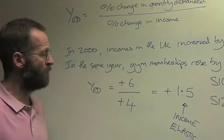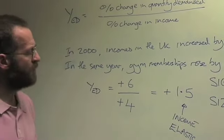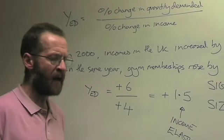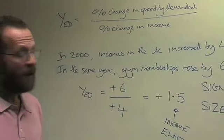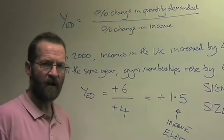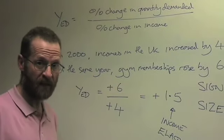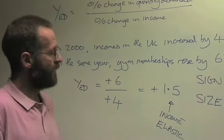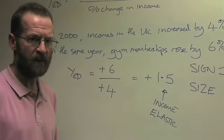But you'll also know that if incomes fall, if the economy goes into a recession, or a particular area is hit badly by, say, a closure of a major employer, then the sales of gym memberships will fall by 1.5 times whatever the fall in income is. So if income falls by 6% in a region, then the gym memberships will go down by 1.5 times 6 or 9%.